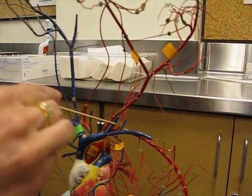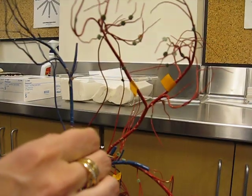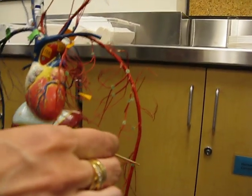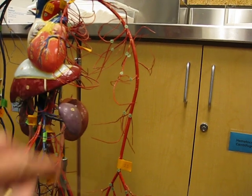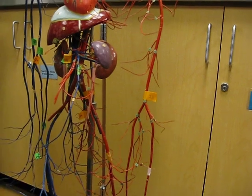Left subclavian then splits into left vertebral which goes up to the brain, and left axillary through the underarm. Axillary becomes brachial to the arm. Brachial splits into ulnar medial and radial lateral.